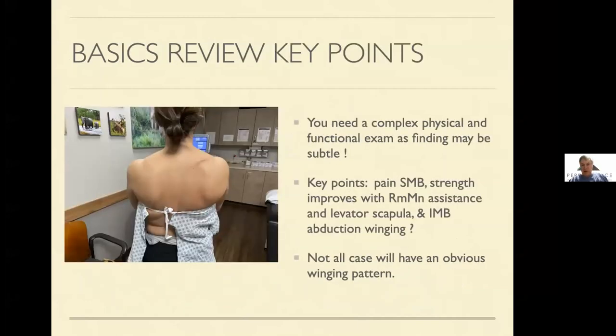You need a complex physical exam and functional exam to highlight your ultrasound. The key points in her exam are that we need to spend time at the superior medial border, because that's where her pain is. Strength improves with rhomboid minor, so we're going to spend extra time there and looking at levator scap as well, and also at the spinal accessory nerve based on that inferior medial border area.